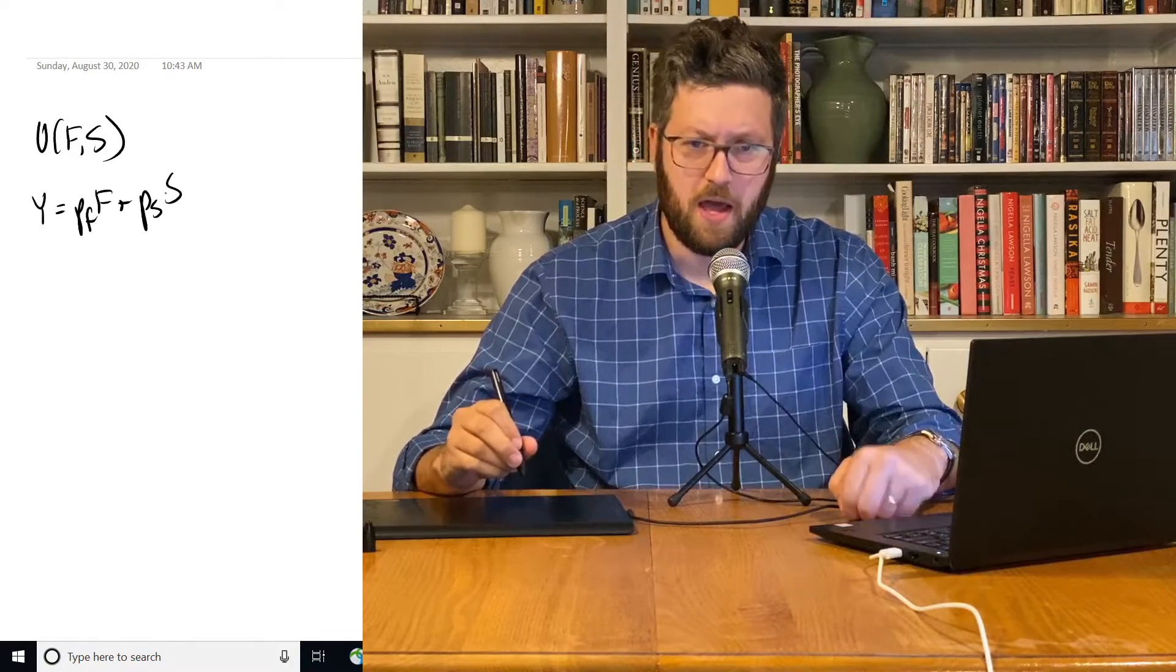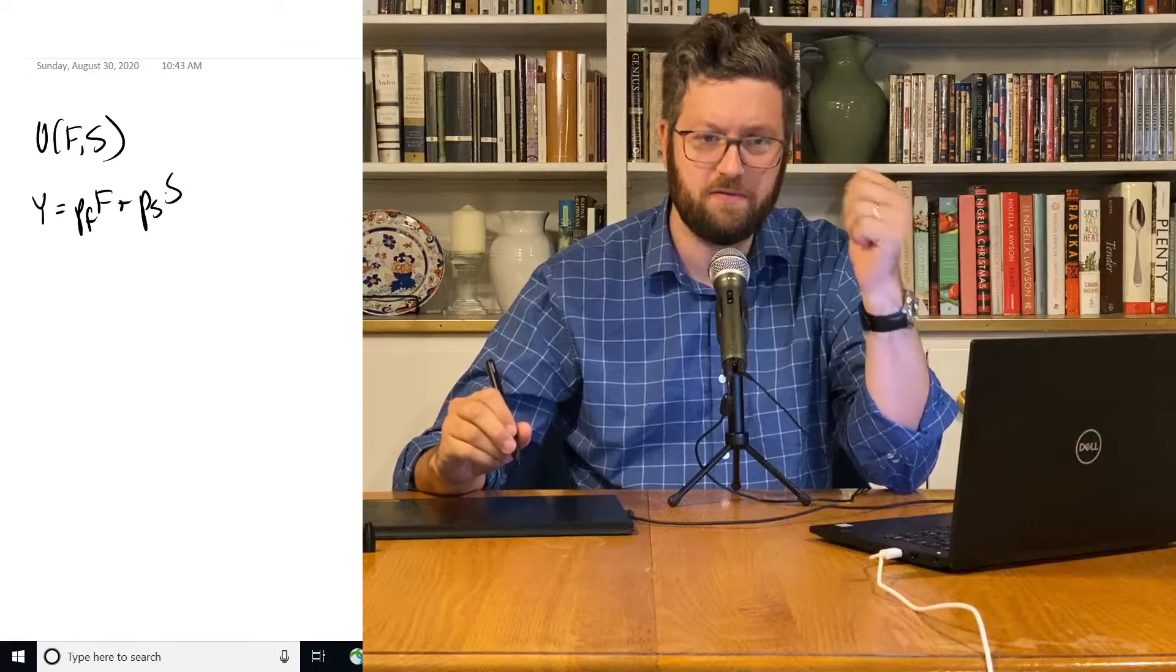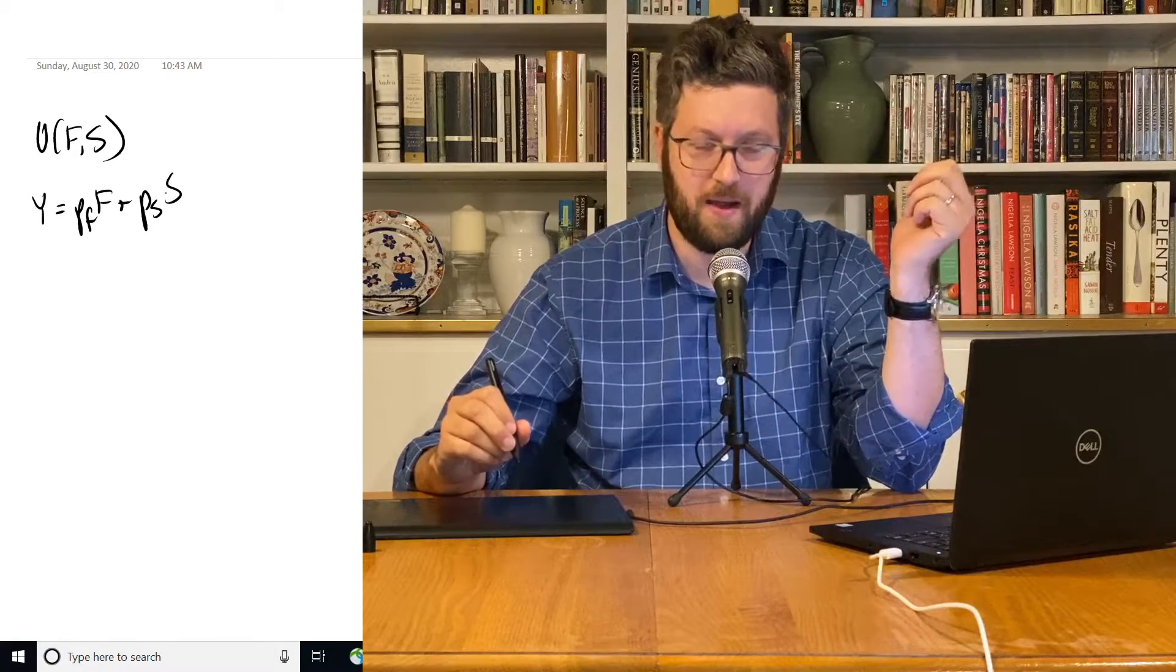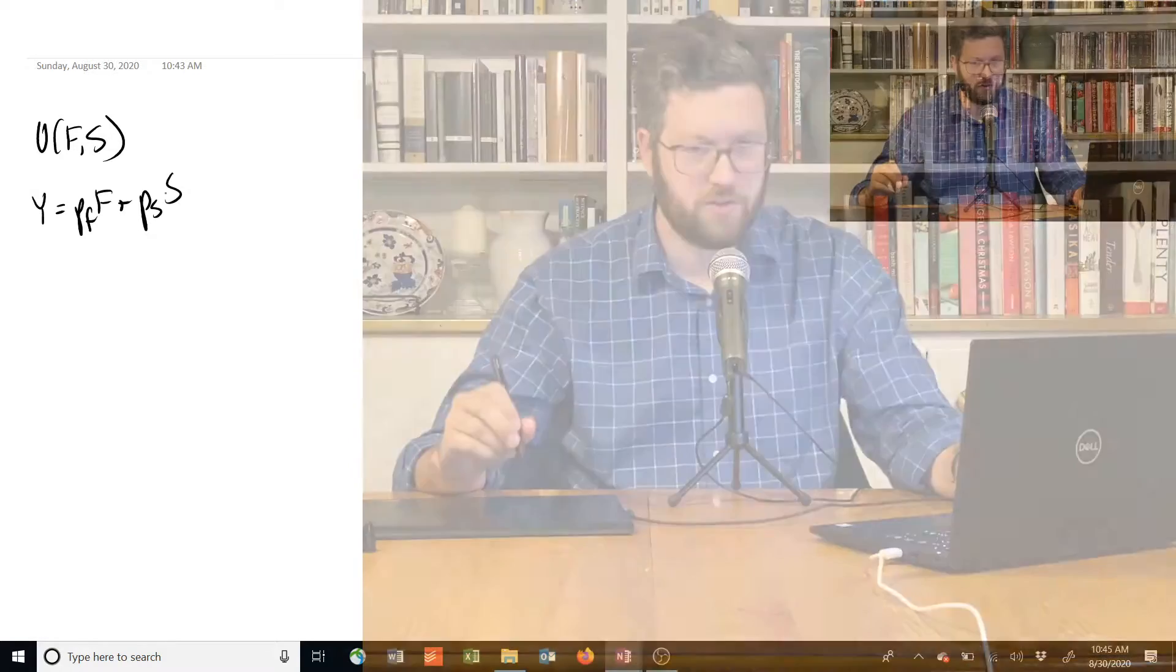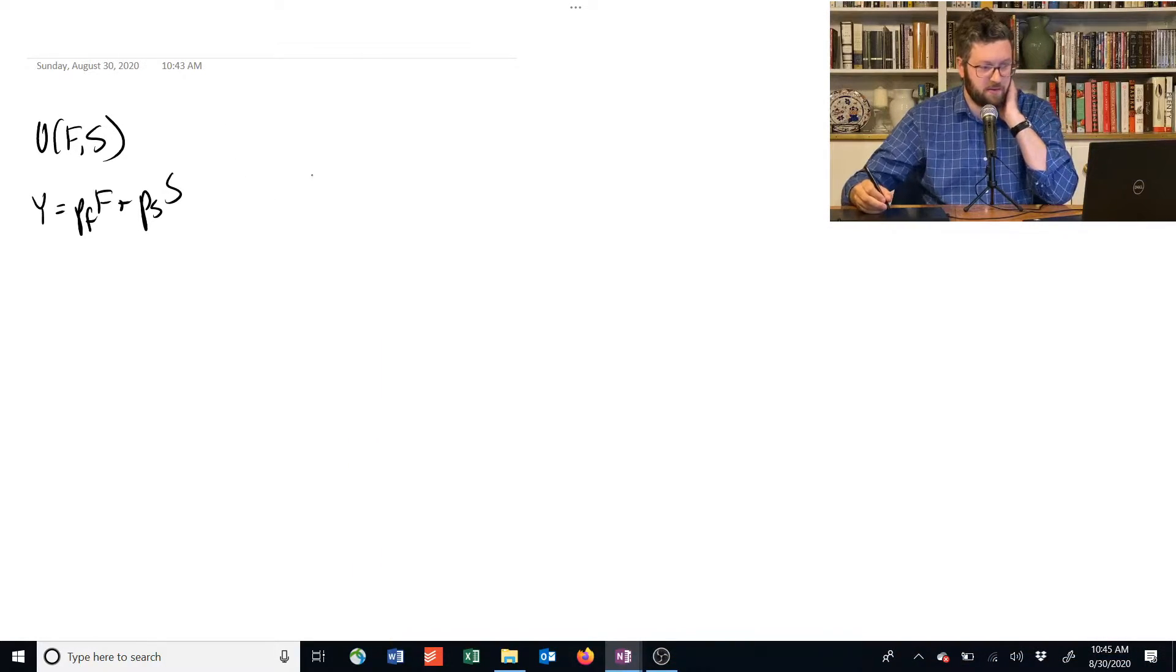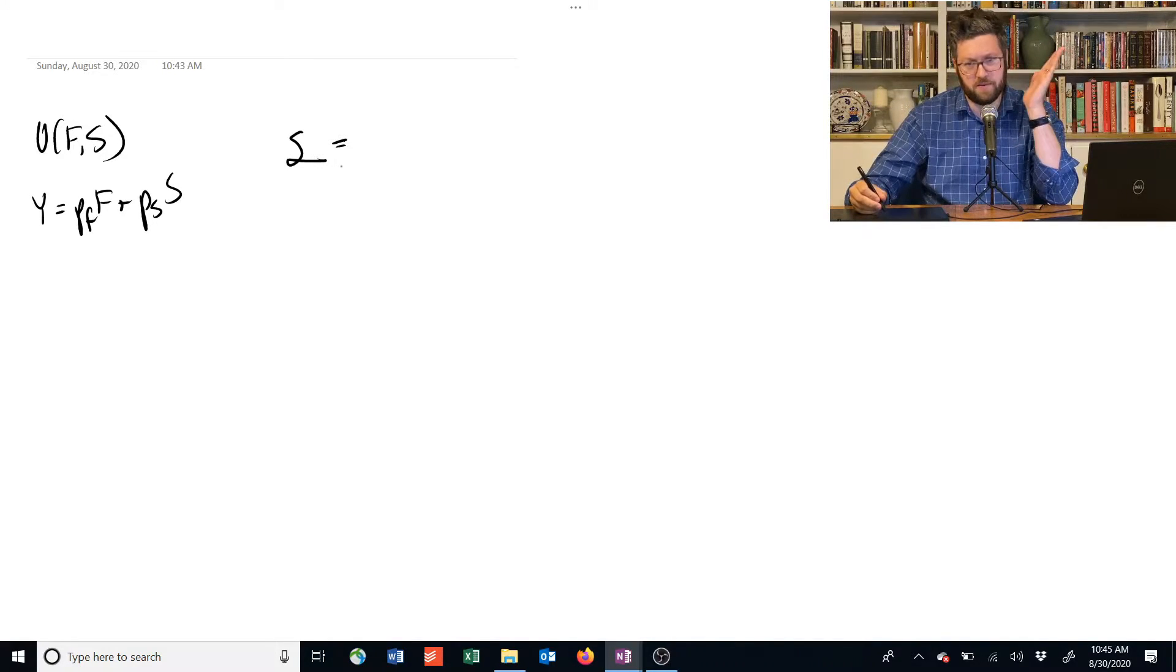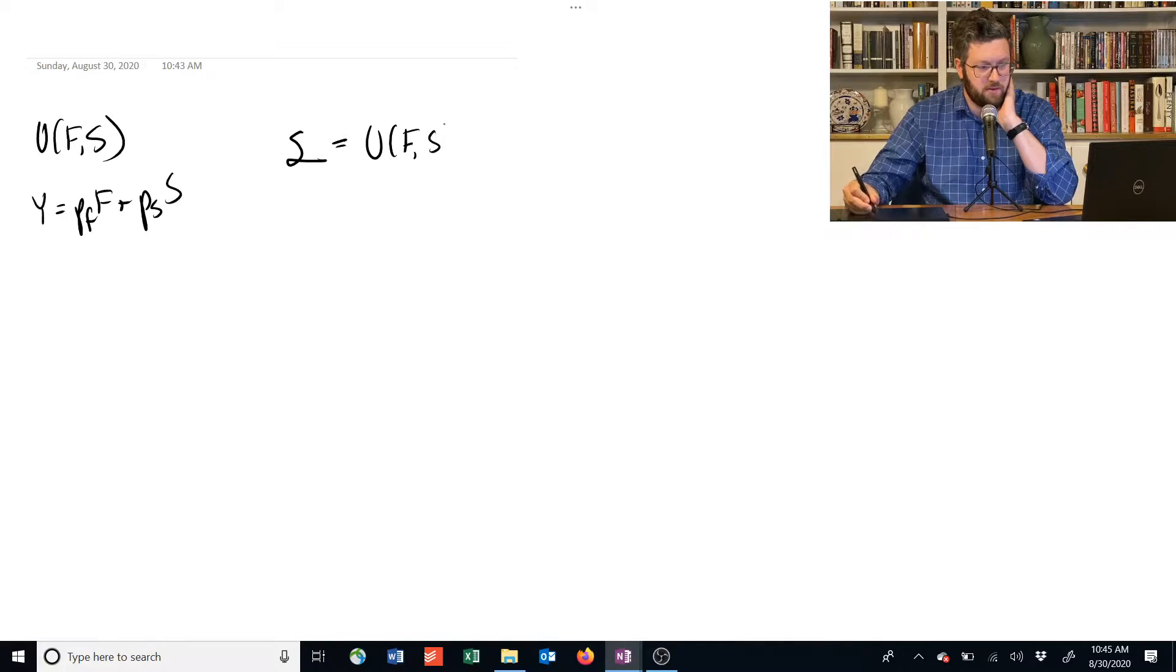Okay, how do we use the Lagrangian method to find the amount of food and shelter that we're going to buy? Well, we're going to start by setting up our Lagrangian. So we're going to use a fancy L to represent this equation, and we're going to write the thing we're trying to maximize first.